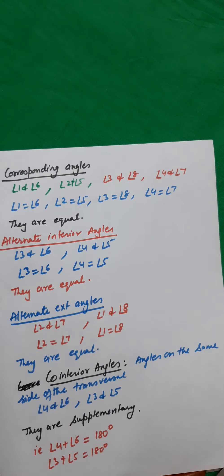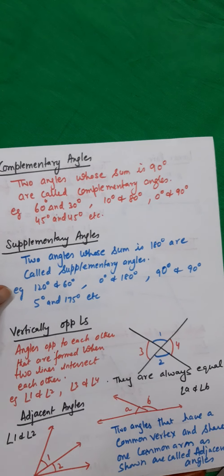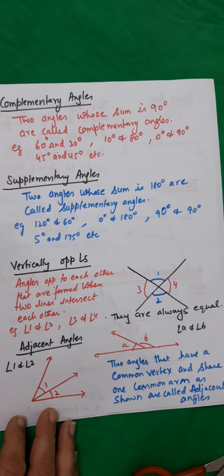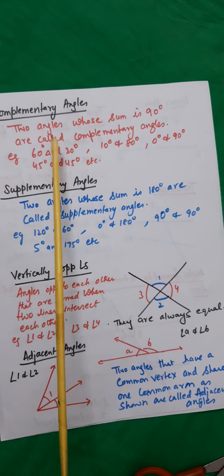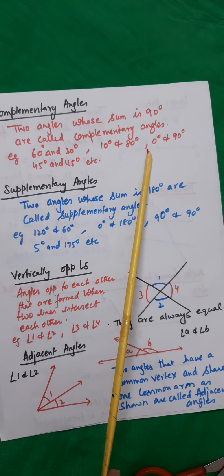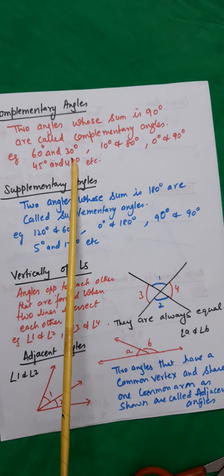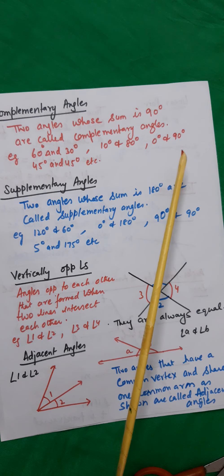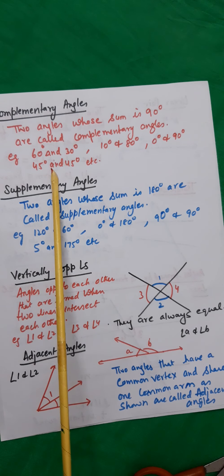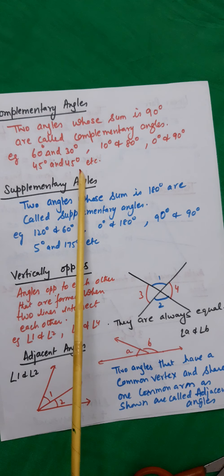Now there are a few more types of angles in general that we find — complementary angles. You must have heard the name complementary angles — they complement each other. Their property is that two angles whose sum is 90 degrees are called complementary angles. Examples: 60 and 30 degrees, 10 and 80 degrees, 0 and 90 degrees, and 45 and 45 degrees. Both are complements of each other.